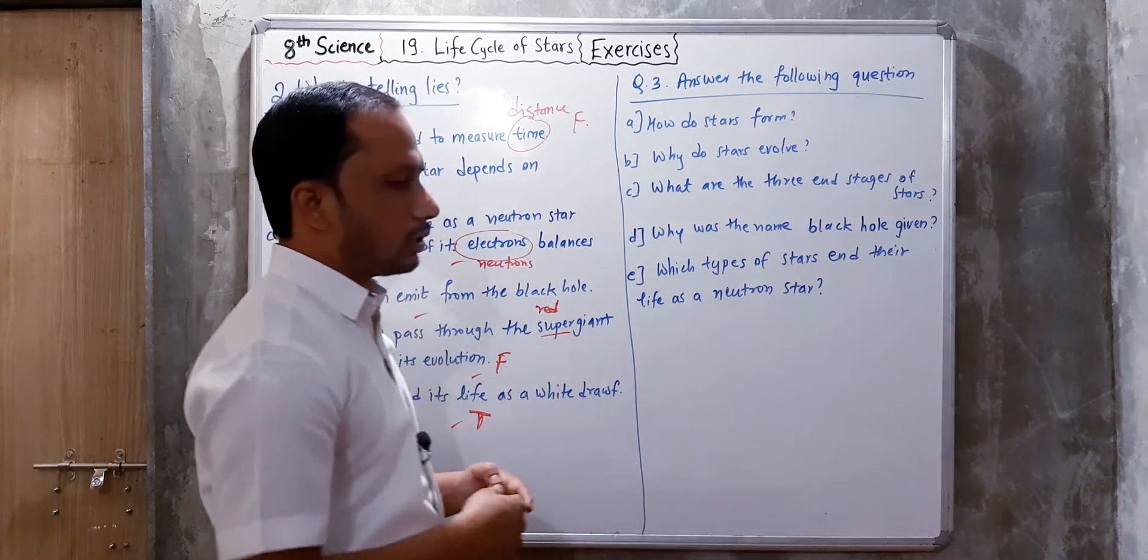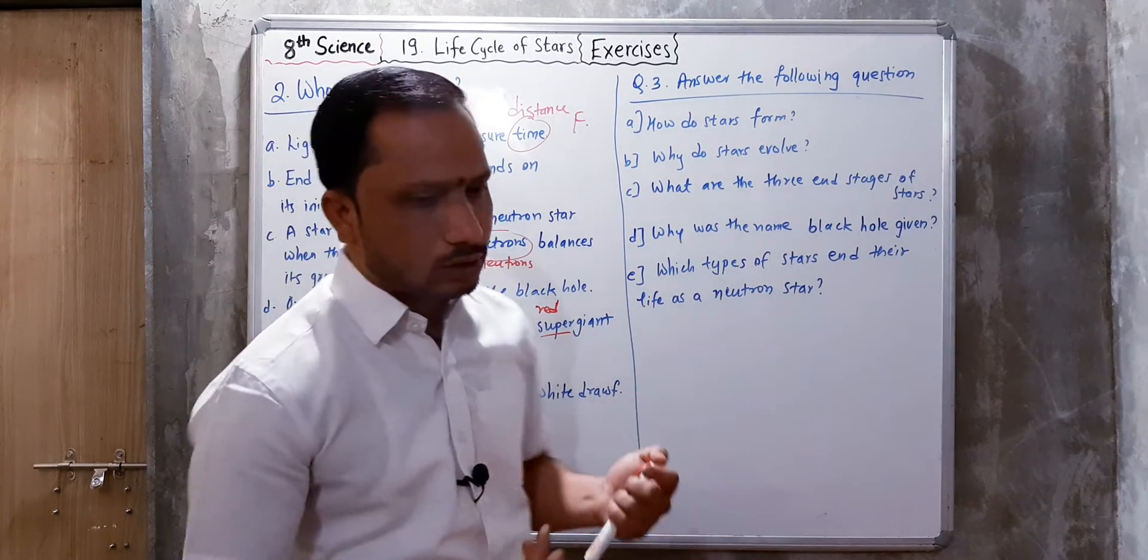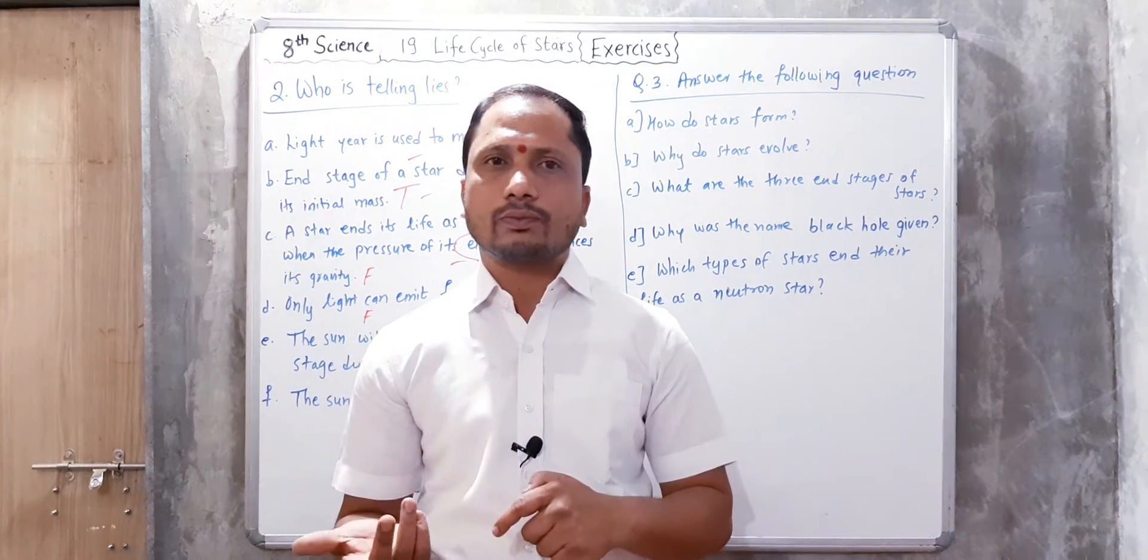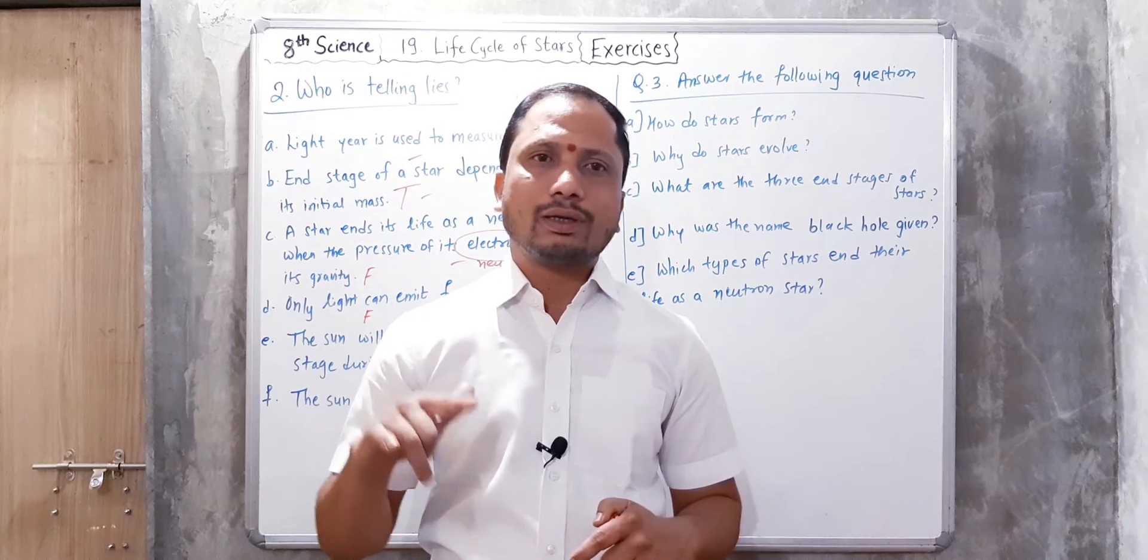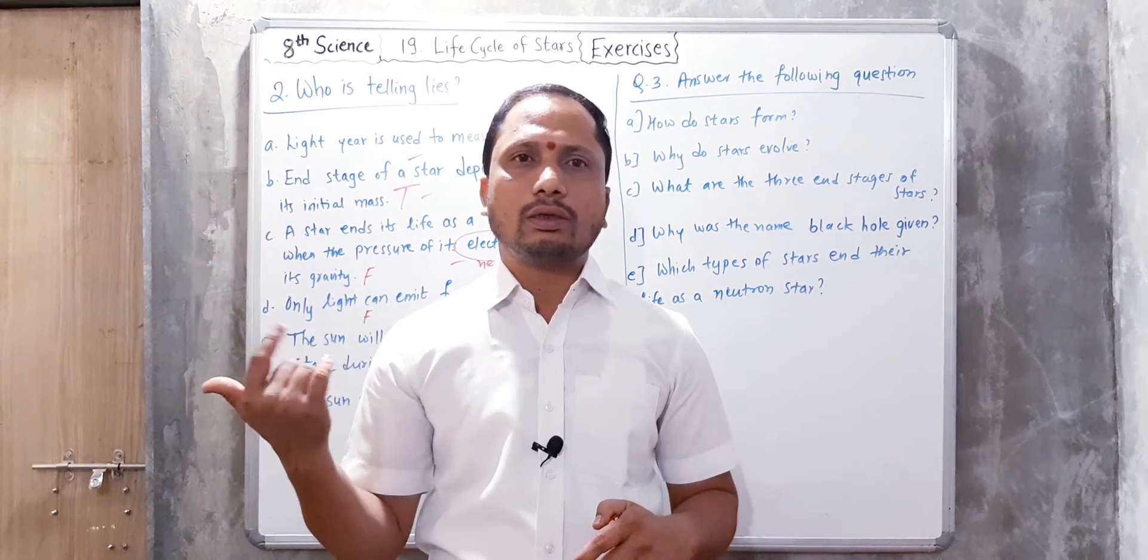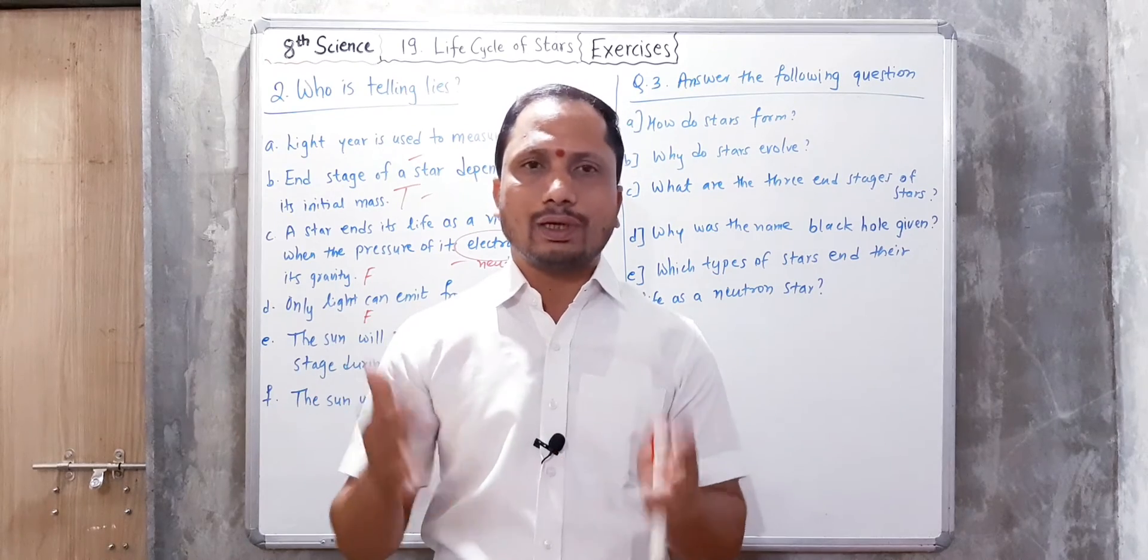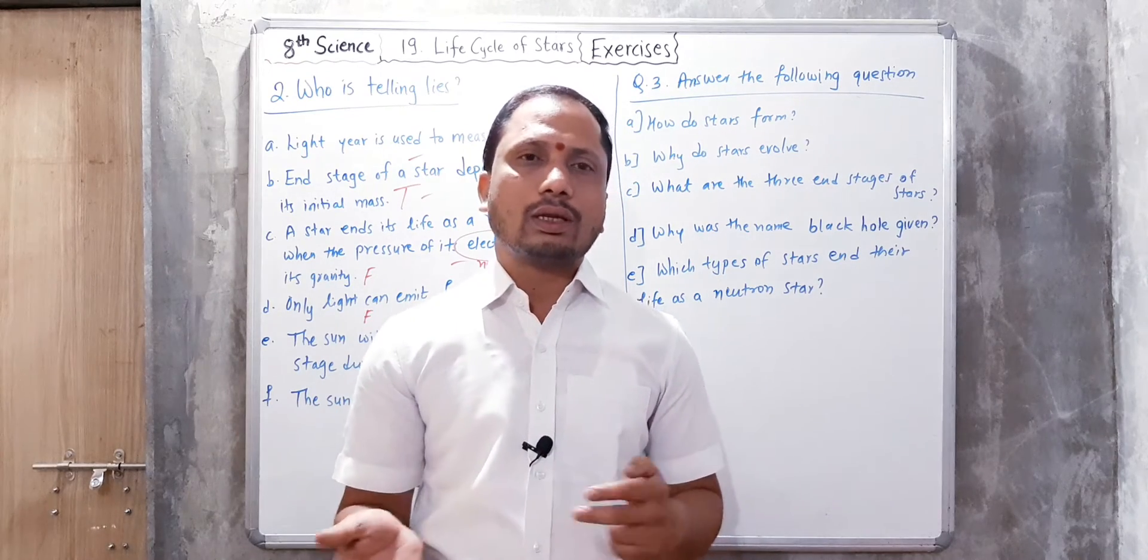Which types of stars end their life as a neutron star? The stars which have mass eight times greater than the Sun and up to twenty times - between that mass range, those stars end their life as a neutron star.